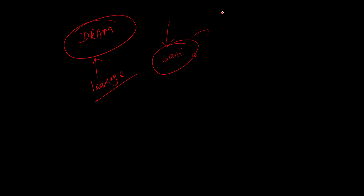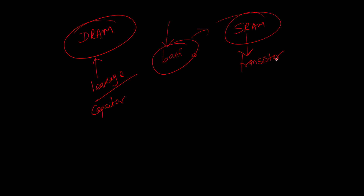In the DRAM scenario, data is stored using a capacitor. This capacitor has power leakage — meaning the charge slowly leaks. DRAM stores data in a capacitor that slowly leaks charge, so the data may be lost. To prevent this, the capacitor in DRAM needs to be refreshed periodically. The computer refreshes or refills the charge so that the data won't be lost.